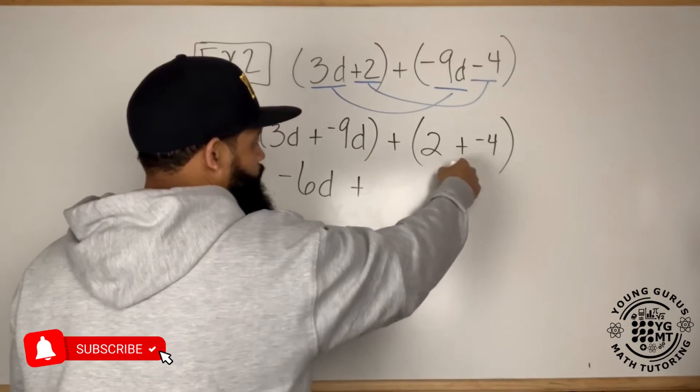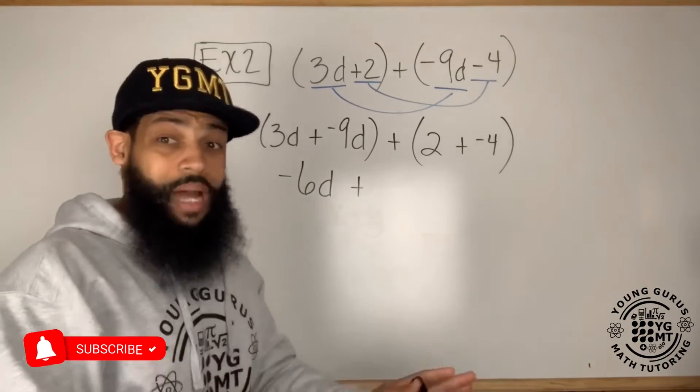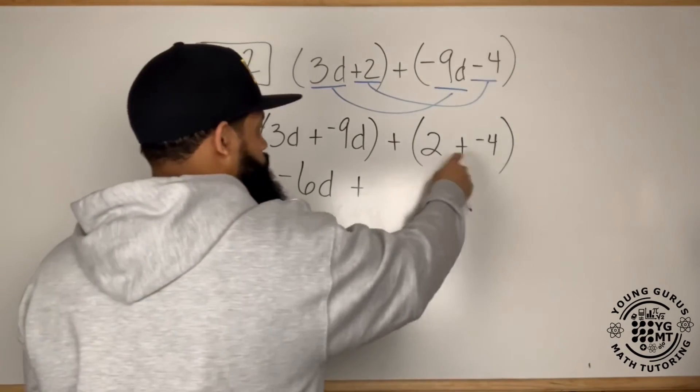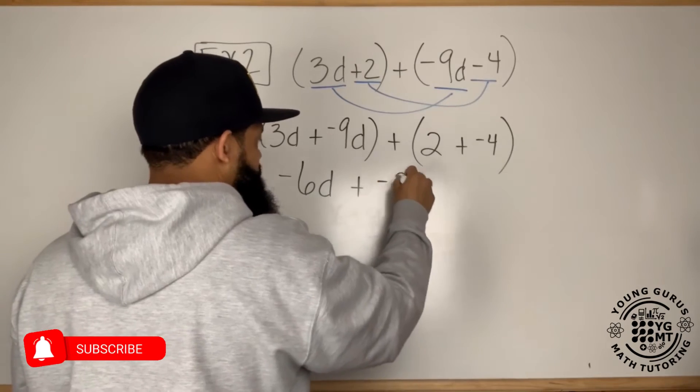And then I'm going to bring down that addition sign. 2 plus negative 4 is the same thing as 2 minus 4. So 2 plus negative 4 is negative 2.